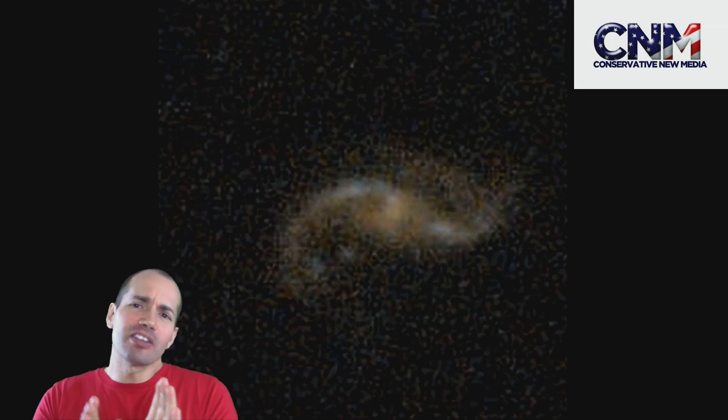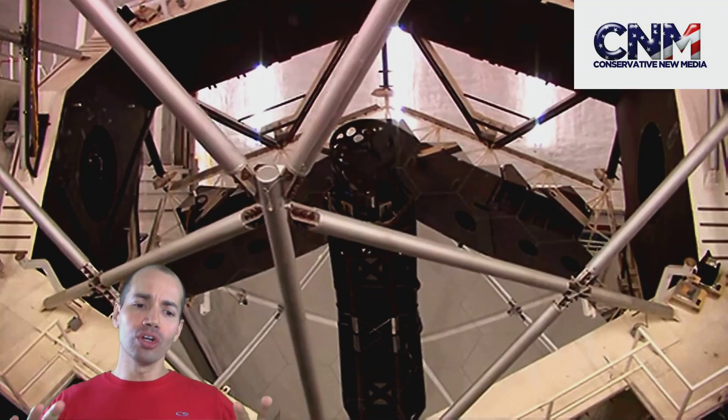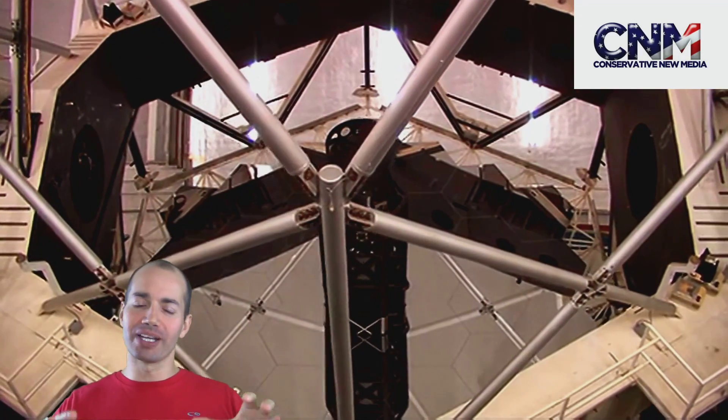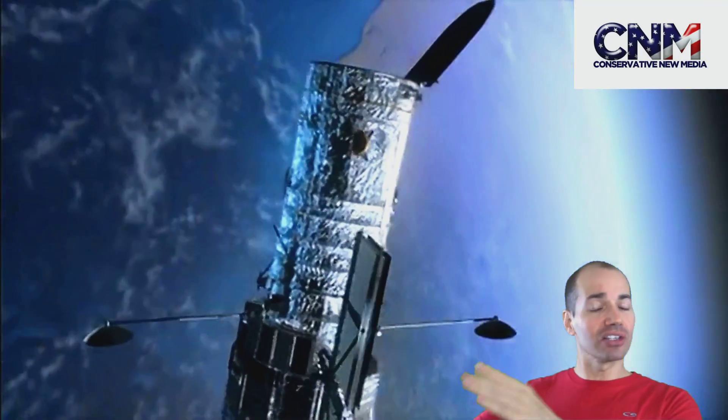When you have disk galaxies like the Milky Way, what scientists have been able to examine and study is that these galaxies get more ordered and become more like what we see now actually a little bit later than what scientists previously thought.